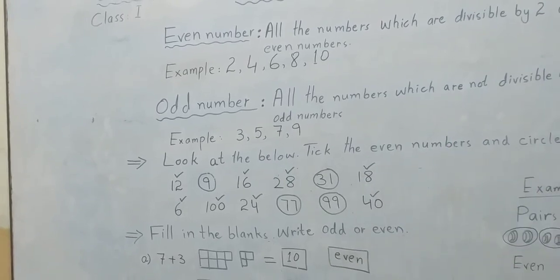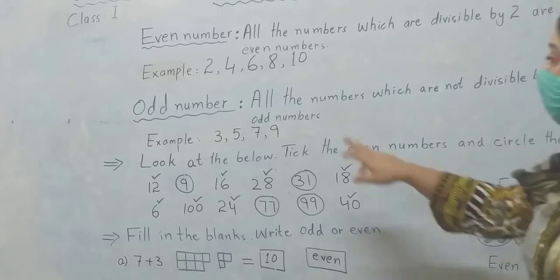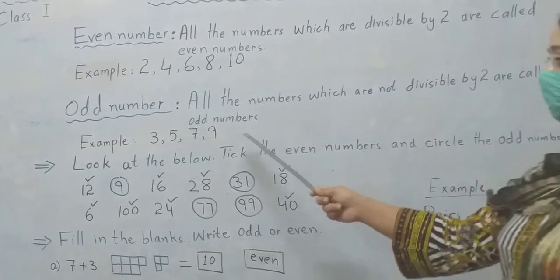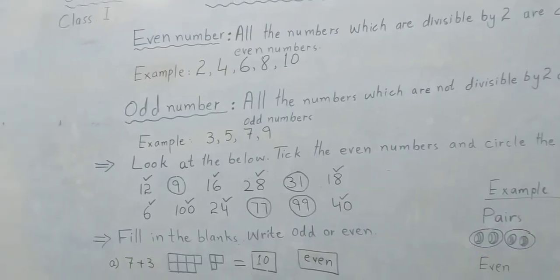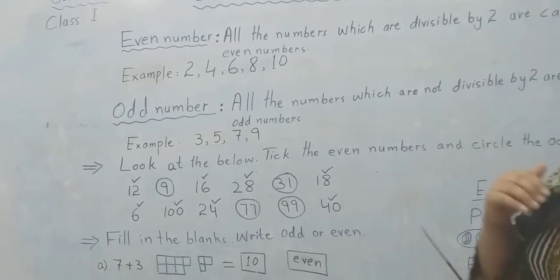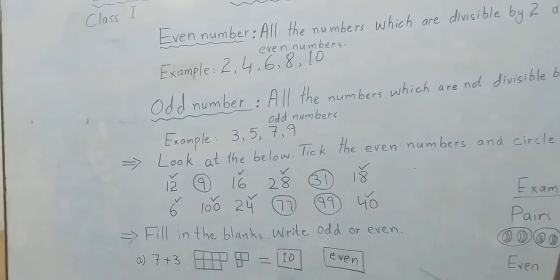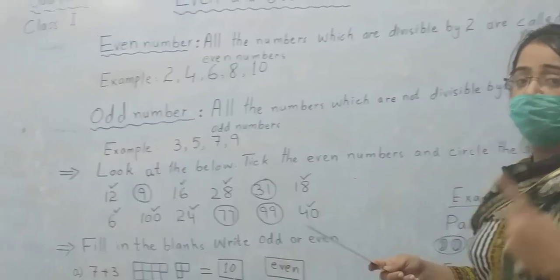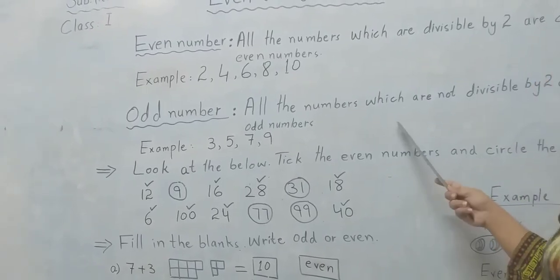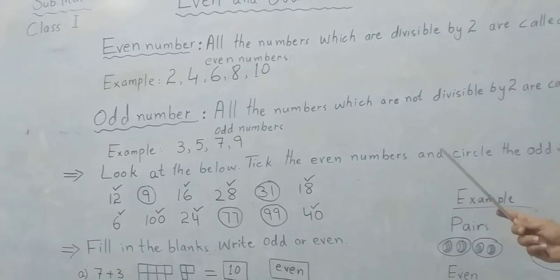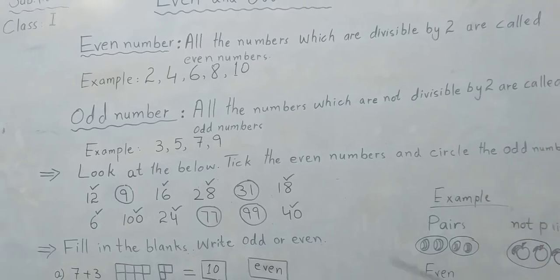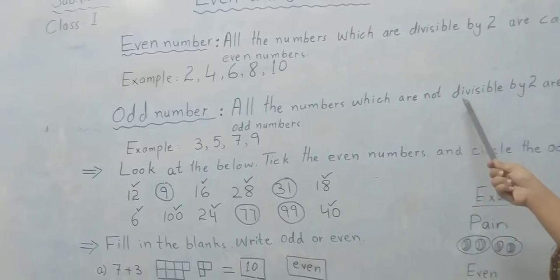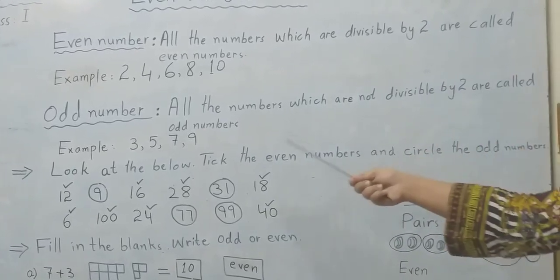Let's have an introduction of odd numbers. All the numbers which are not divisible by two are called odd numbers. You might have noticed that odd numbers and even numbers are opposite to each other. Even numbers are those divisible by two, and odd numbers are all the numbers which are not divisible by two.